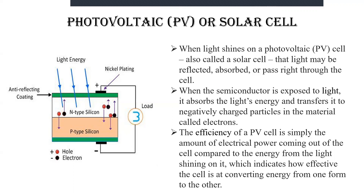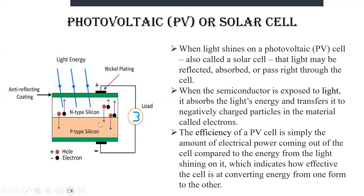This indicates how effectively the cell converts energy from one form to another. The complete amount of electricity produced from a PV cell depends on many characteristics like intensity and wavelength of the light falling on the anti-reflecting coating material, and how it has been absorbed. All these contribute to the performance attributes of the cell. An important property of the PV semiconductor is the band gap.